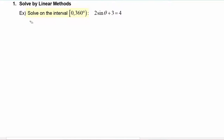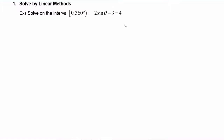In this first example, we have to solve on the interval 0 to 360 degrees, and we're given the equation 2 sine theta plus 3 is equal to 4. A lot of this will feel like an algebra problem. The first step would be to subtract 3 from both sides, so that now we have 2 sine of theta is equal to 1. Next we would divide both sides by 2.